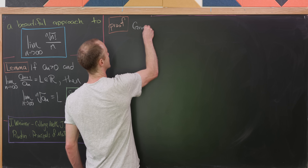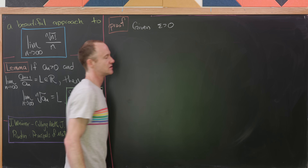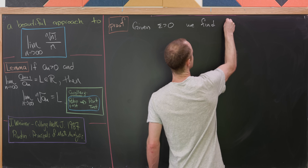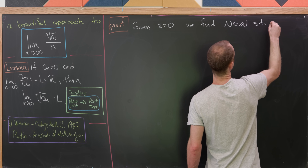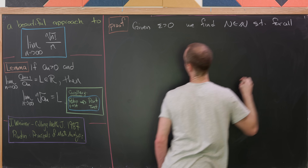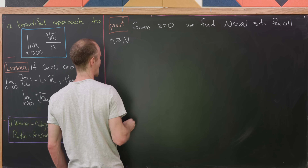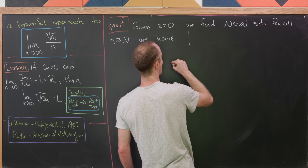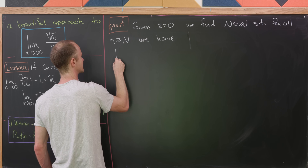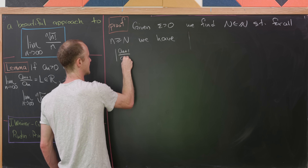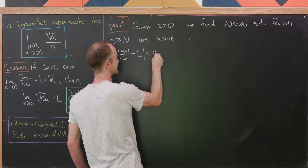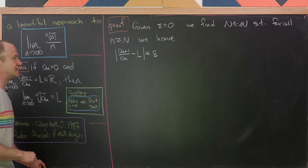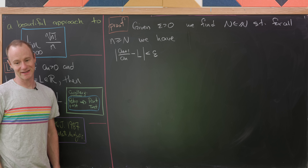We're going to start with the precise definition of the limit. So let's say we're given some epsilon greater than zero; then we'll find some capital N, which is a natural number, such that for all little n greater than or equal to capital N, the absolute value of a sub n+1 over a sub n minus L is less than epsilon. That's simply the precise epsilon-N definition of the limit for a sequence.